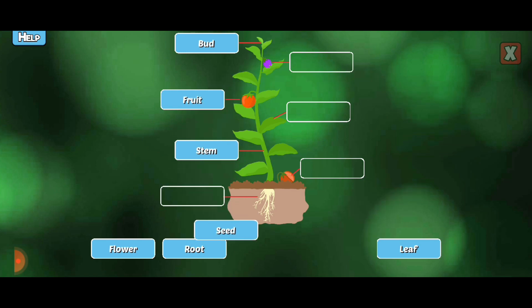Seed. Seeds contain new baby plants. Roots hold the plant steady and absorb water and nutrients.